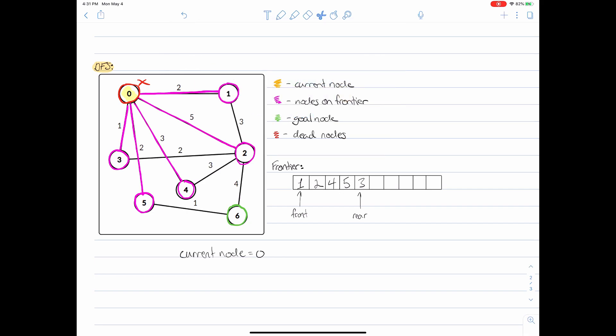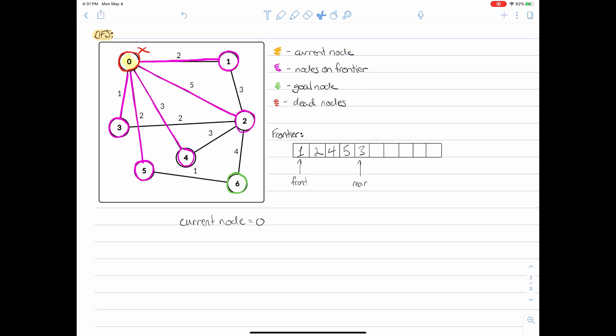Now the big difference between BFS and DFS comes in right now. The way that we would have handled the selection of the next node in BFS is when we're choosing between these five, we would have dequeued in the following way: we would have slid the front pointer over and then we would have popped number one. DFS is different. Instead of dequeuing number one, we actually take this rear and we slide it backwards. And then we dequeue number three. You're going to see that the order in which we explore the nodes is much different. Our current node now is node number three.